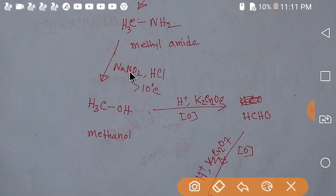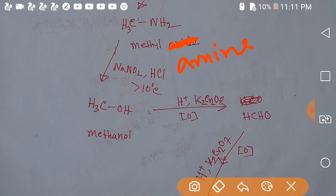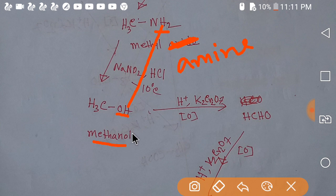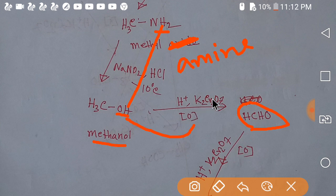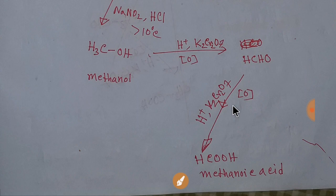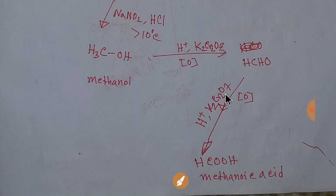If you add sodium nitrite plus acid, then the NH2 group of the amine will become an OH group, and you are getting methanol. If you oxidize this methanol by potassium dichromate and acid, you will get methanal, which is an aldehyde. This aldehyde will then be further oxidized by potassium dichromate and acid to give methanoic acid. Thank you for viewing this video.